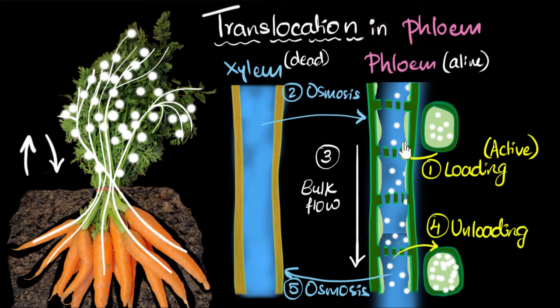And the cell can only generate energy if it is alive. So if the cells were dead, like in xylem, they wouldn't be able to generate energy. They wouldn't be able to load sugar. They wouldn't be able to accept that sugar molecules. It would just diffuse back. And then the phloem transport wouldn't work.